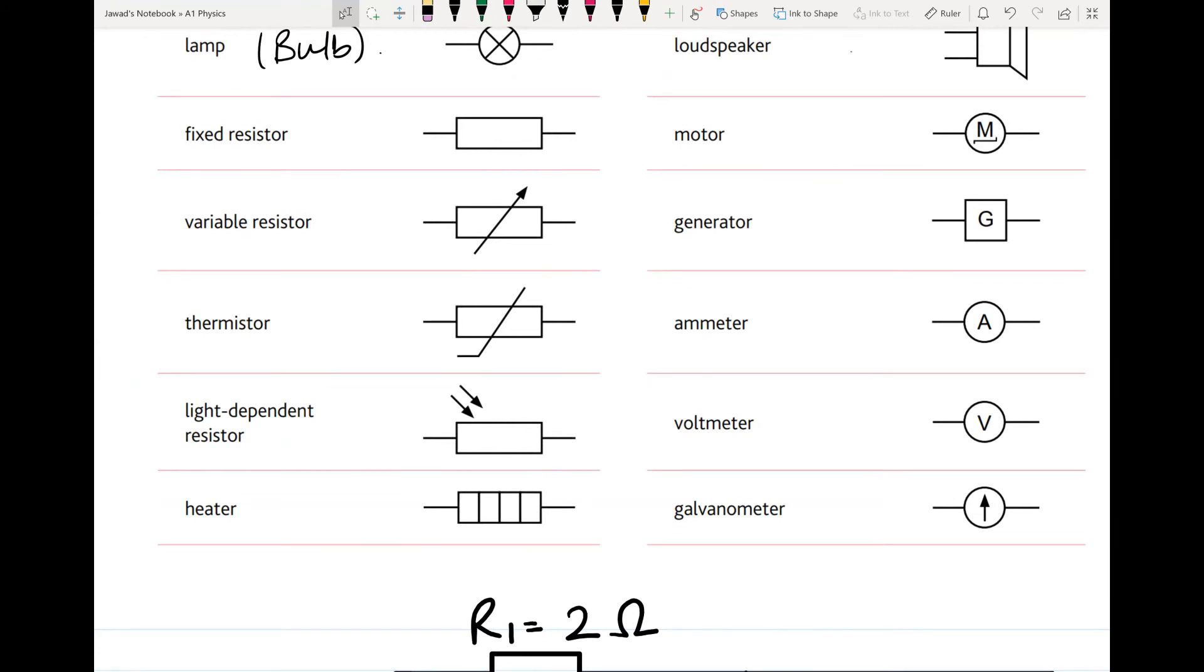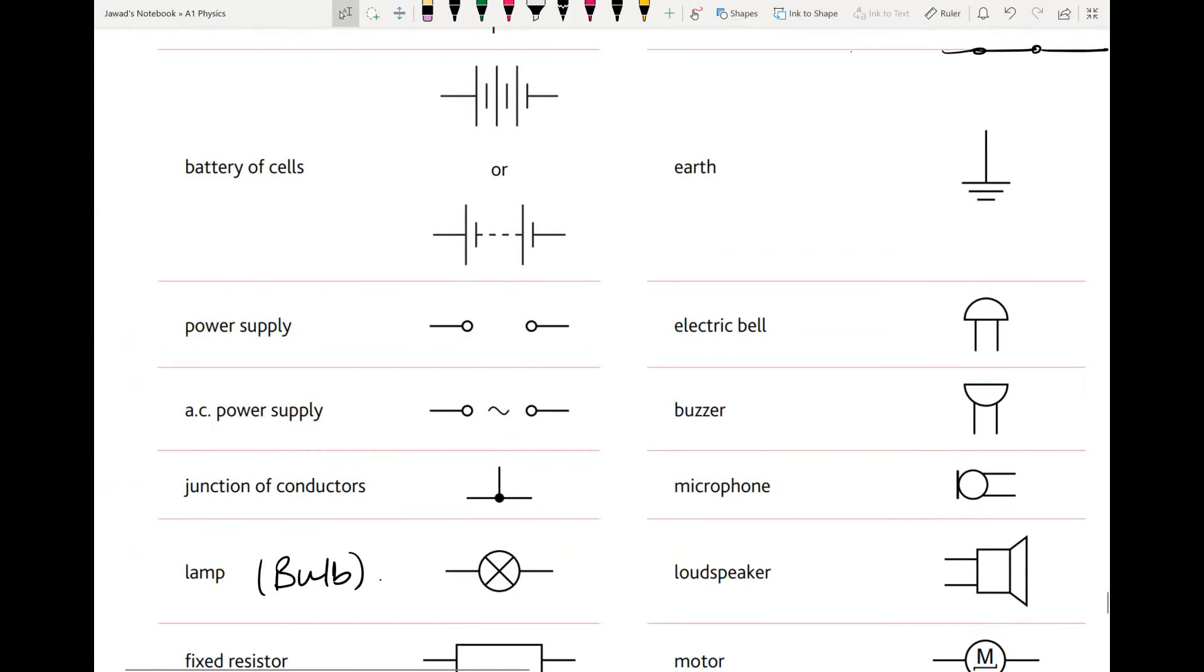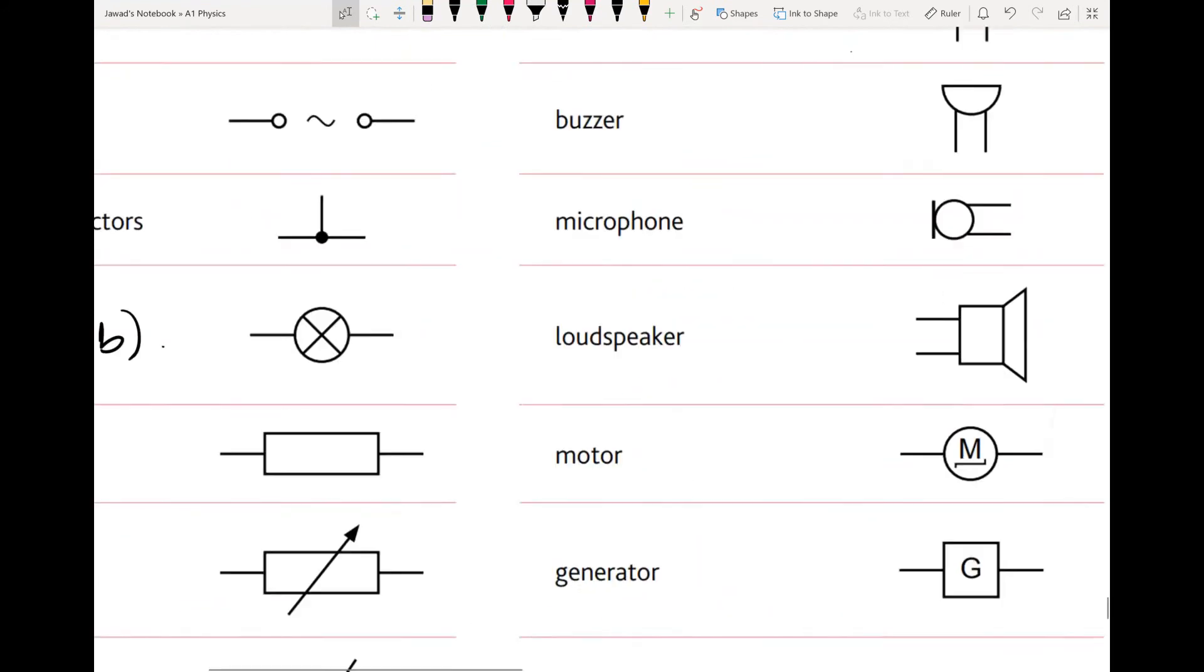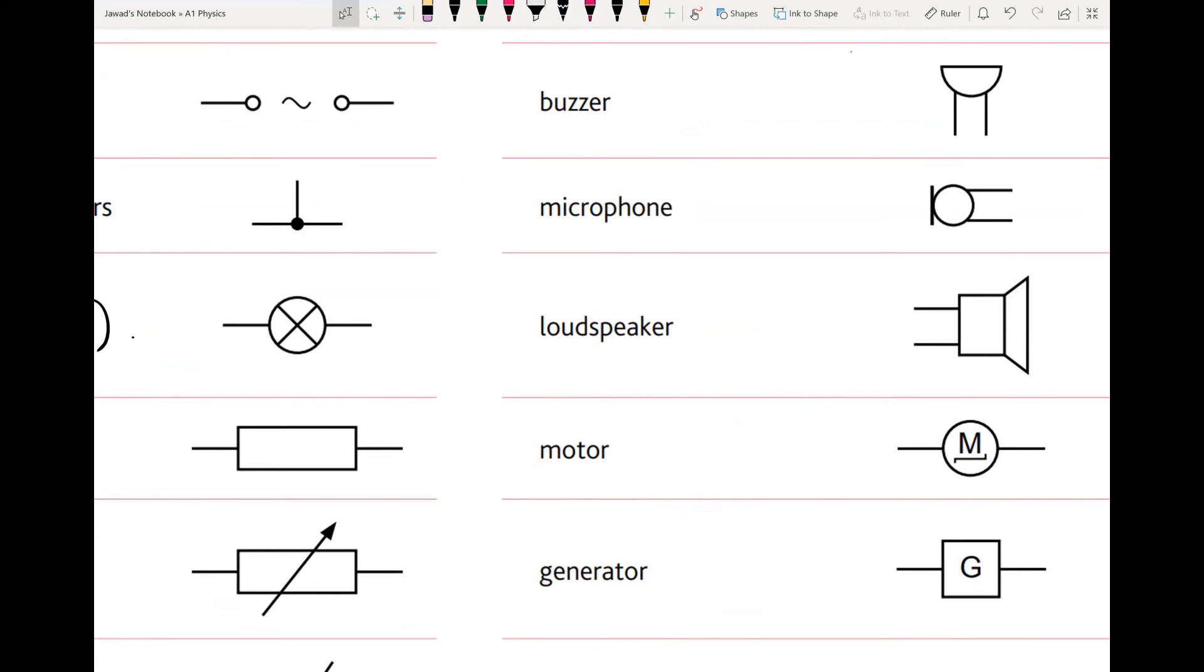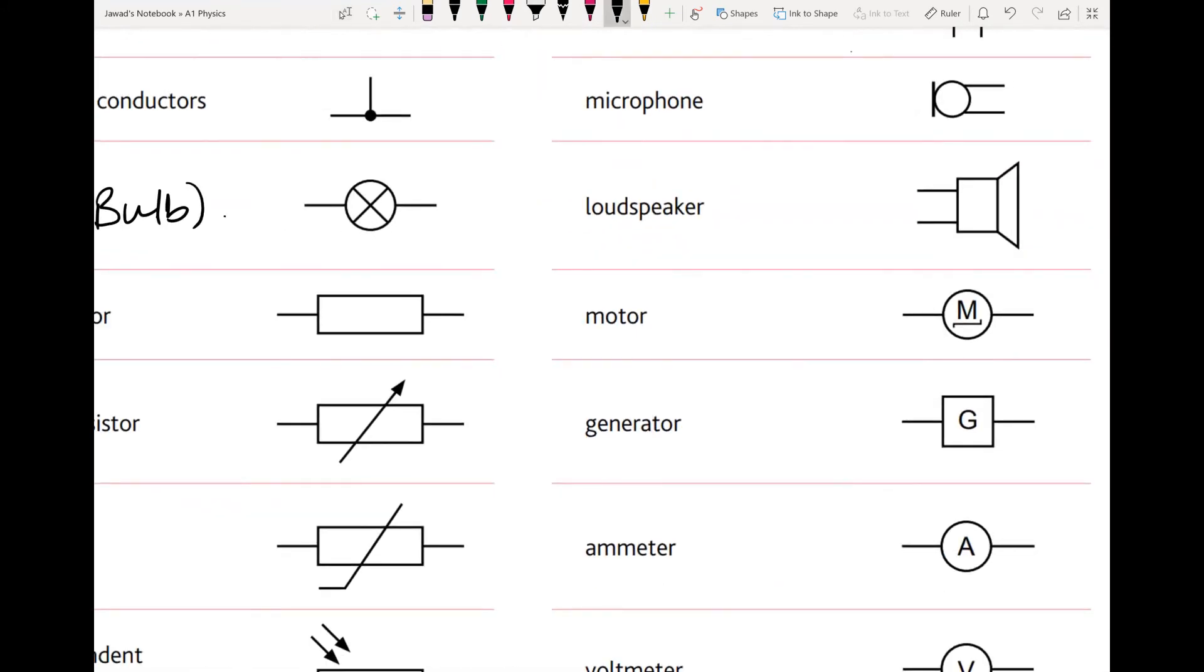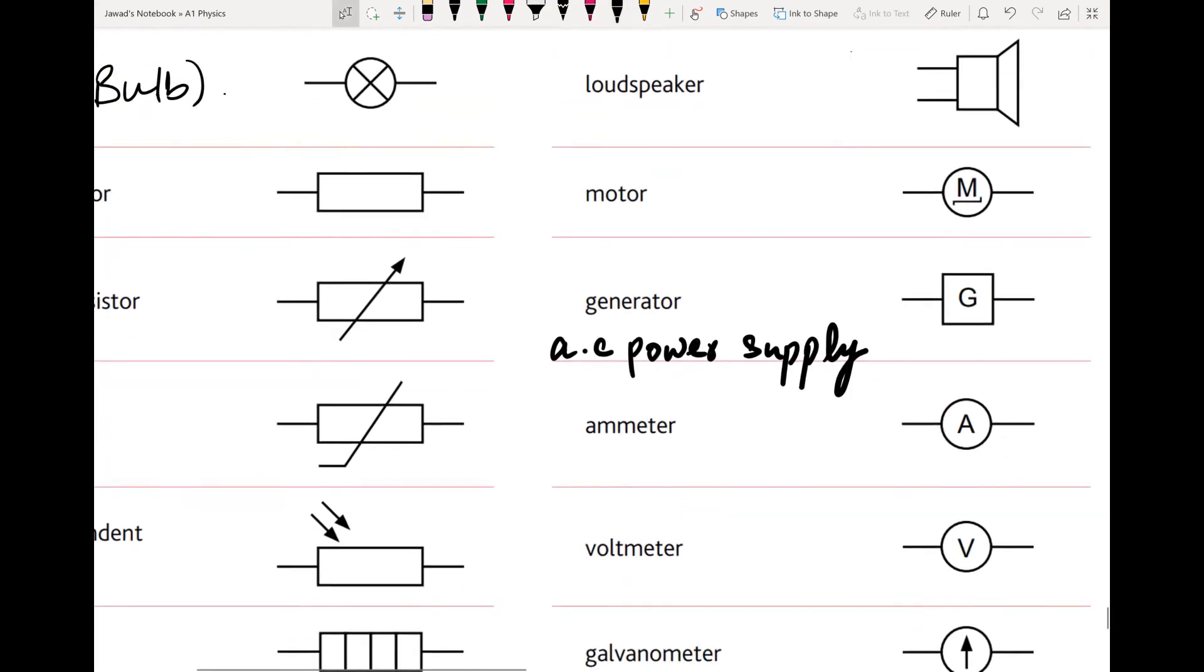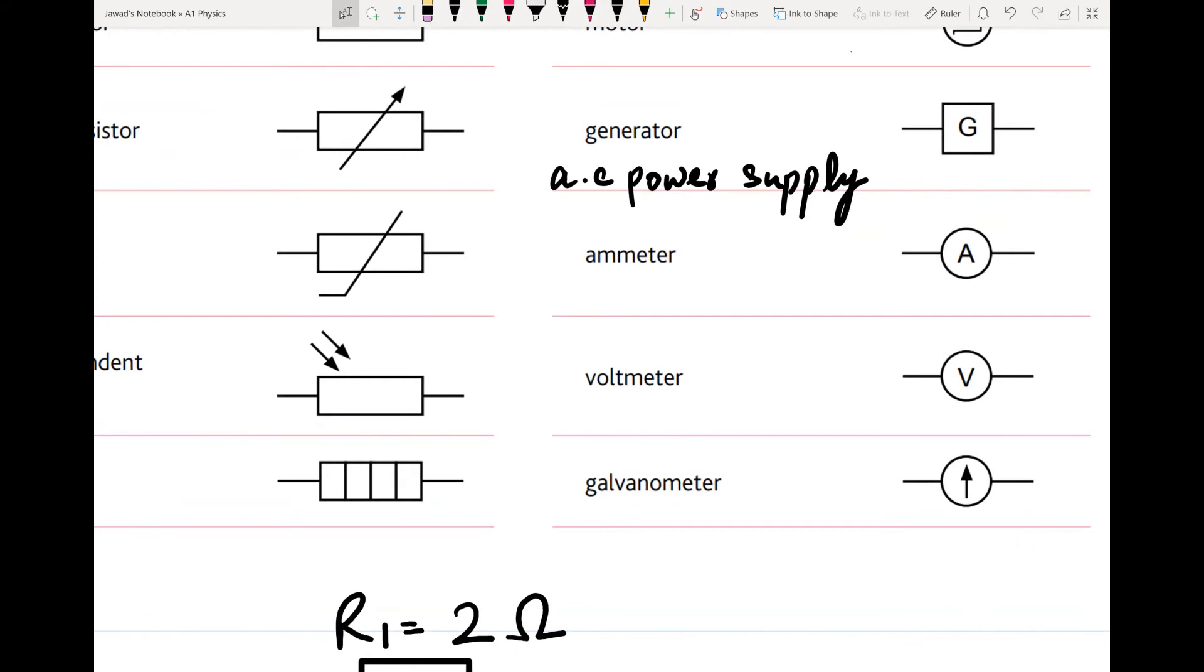Then there is symbol of earth, then symbol of electric bell, and then buzzer, microphone, loudspeaker. Remember the motor symbol carefully. Then there is signal generator. Signal generator is once again an AC power supply, but you have the option to vary the amplitude and frequency. Then there is ammeter, voltmeter, and galvanometer. Galvanometer detects current - if current flows in any direction, it shows a slight deflection.